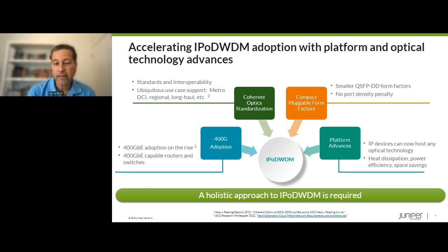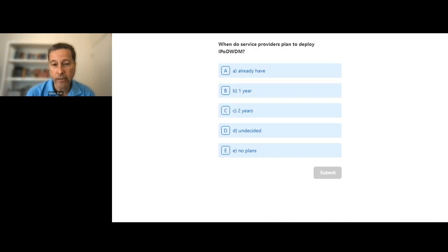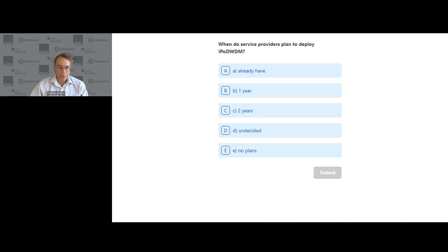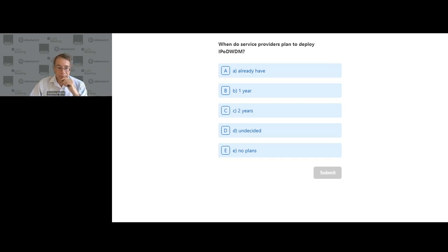Sterling introduced the first poll question for the audience: when do service providers plan to deploy IP over DWDM? The options are: already deployed, within one year, within two years, still undecided, or no plans. Questions are already coming in, reflecting considerable interest in this topic.